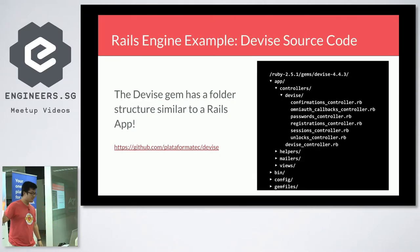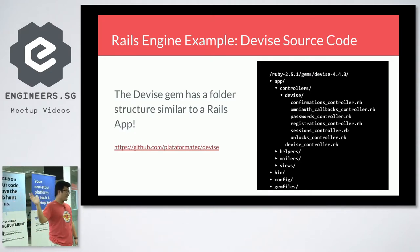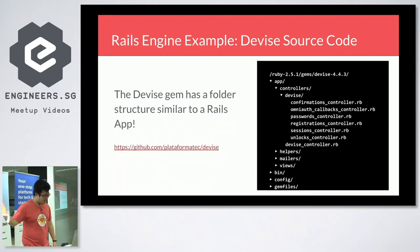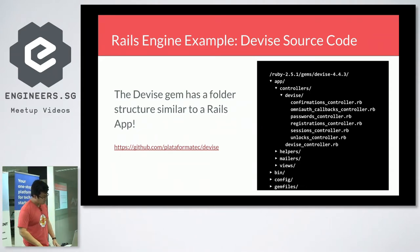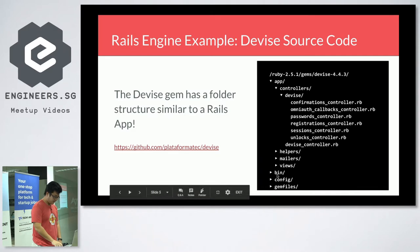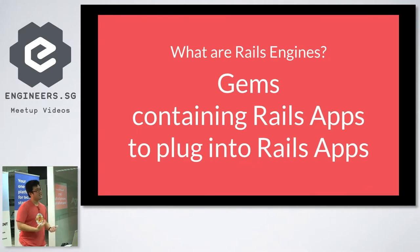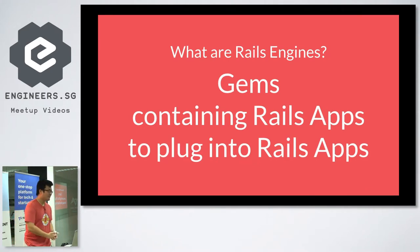If you look in the source code — and I only looked in the source code because I wanted to get it to work the way I wanted, not the way it did out of the box — you realize it has an app folder, inside of which there is a controllers folder and a views folder and all the stuff that you find in a normal Rails app. There's also some gem file stuff in there. So this is telling you that Rails engines are gems that contain Rails apps that you can plug into other Rails apps. Rails engines must be gems.